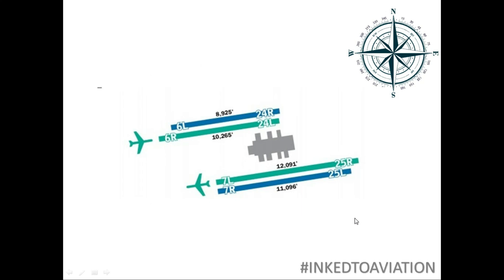Can we have four parallel runways? Yes, of course. This is San Francisco airport. As you can see, our aircraft is landing on 06 right, and at the same time an aircraft is taking off from 07 left. At the same time you can see 07 right and 25 left, and here 06 left and 24 right.